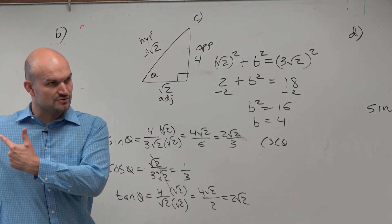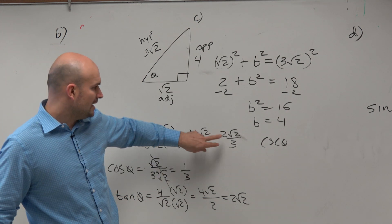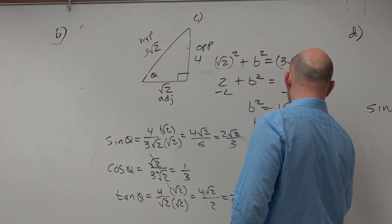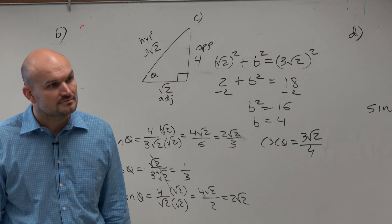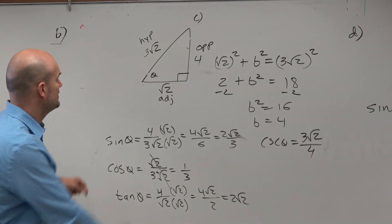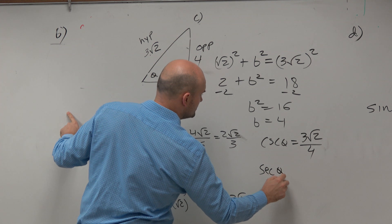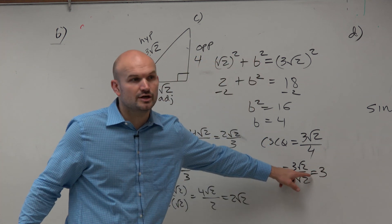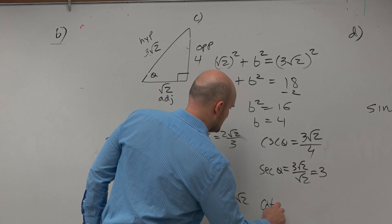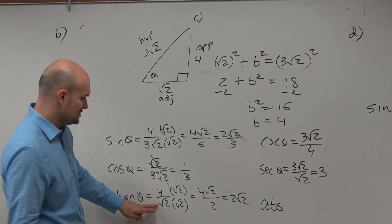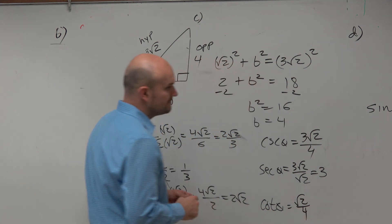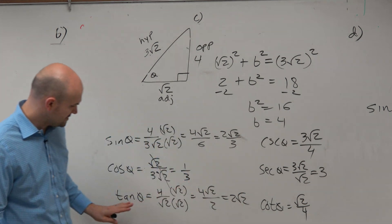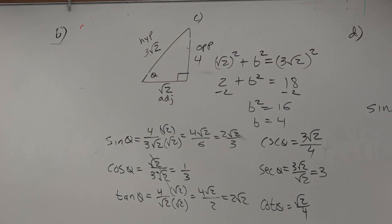The next thing is cosecant. If you looked at those rules, cosecant is just the reciprocal of sine — the flipped version. I don't want to flip the final answer because then I'll have a radical in the denominator, but I can flip the original ratio. That gives 3 square root of 2 over 4 — nothing to simplify. Secant is just the reciprocal of cosine; in this case I flip it and the square root of 2's divide out. And last but not least, cotangent is the reciprocal of tangent, giving square root of 2 over 4.